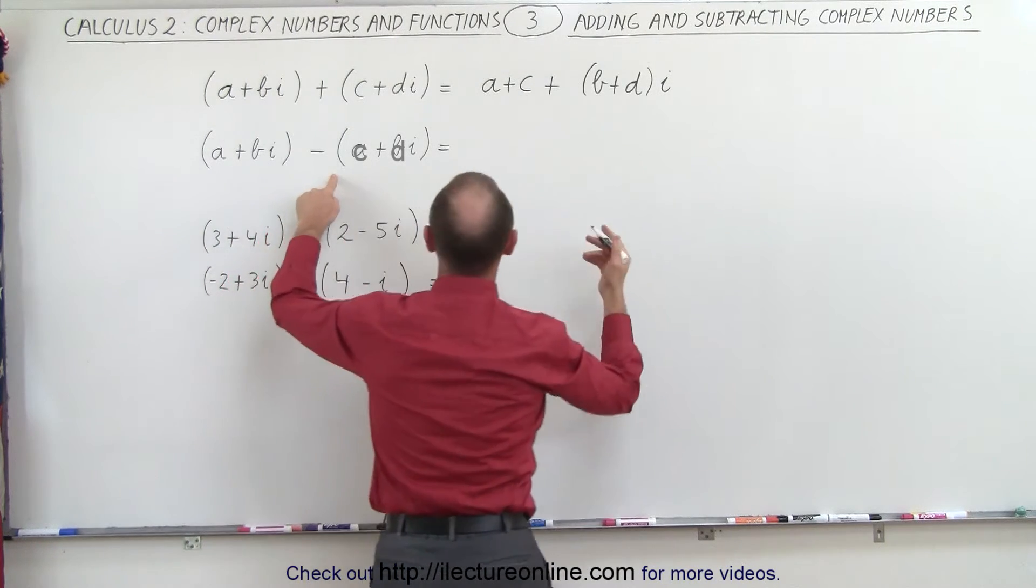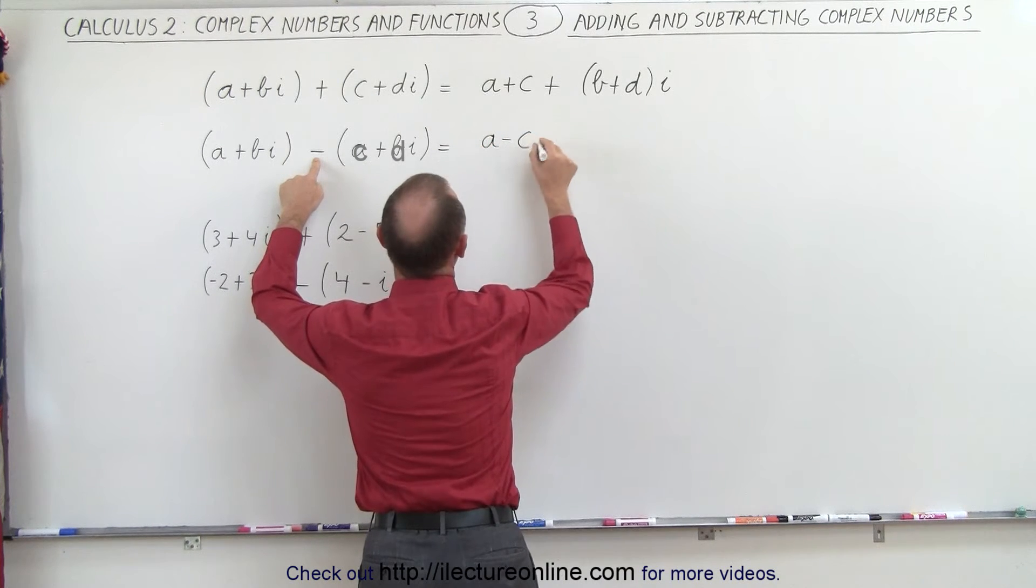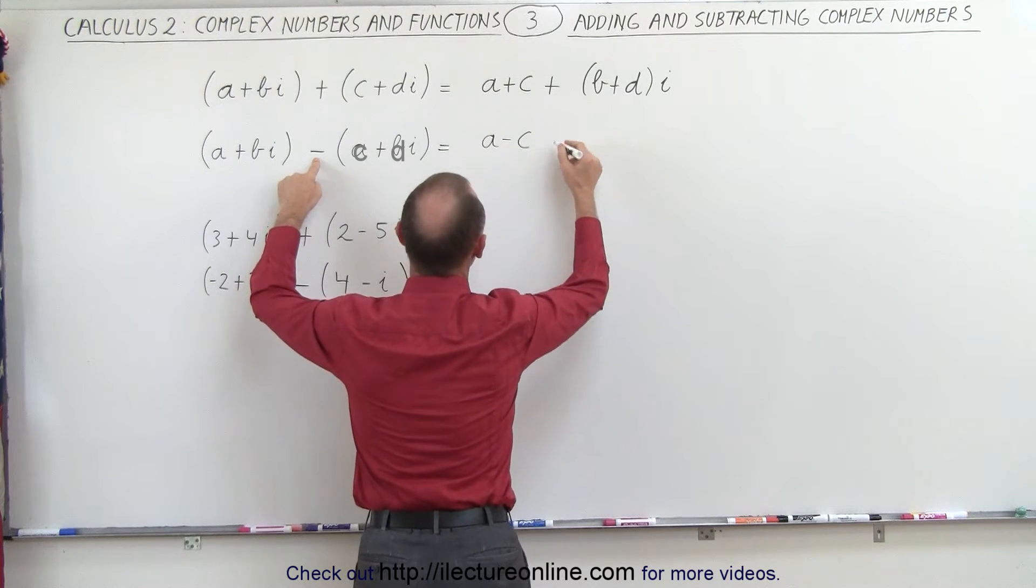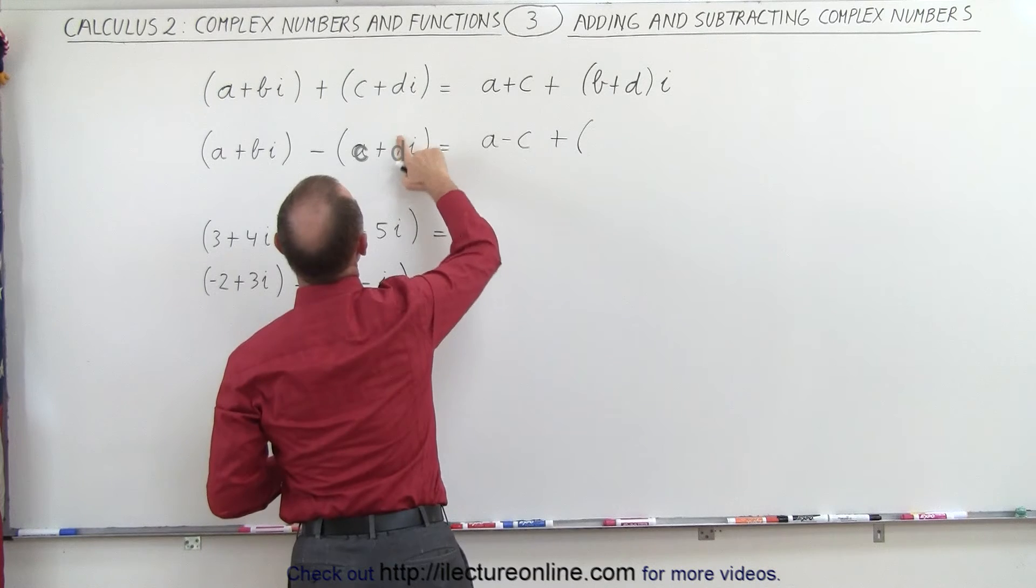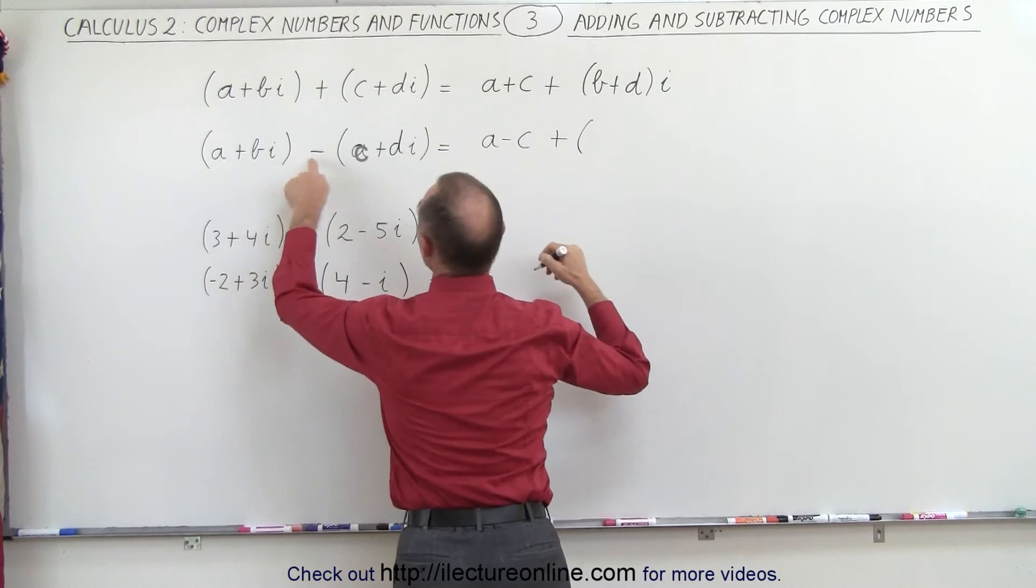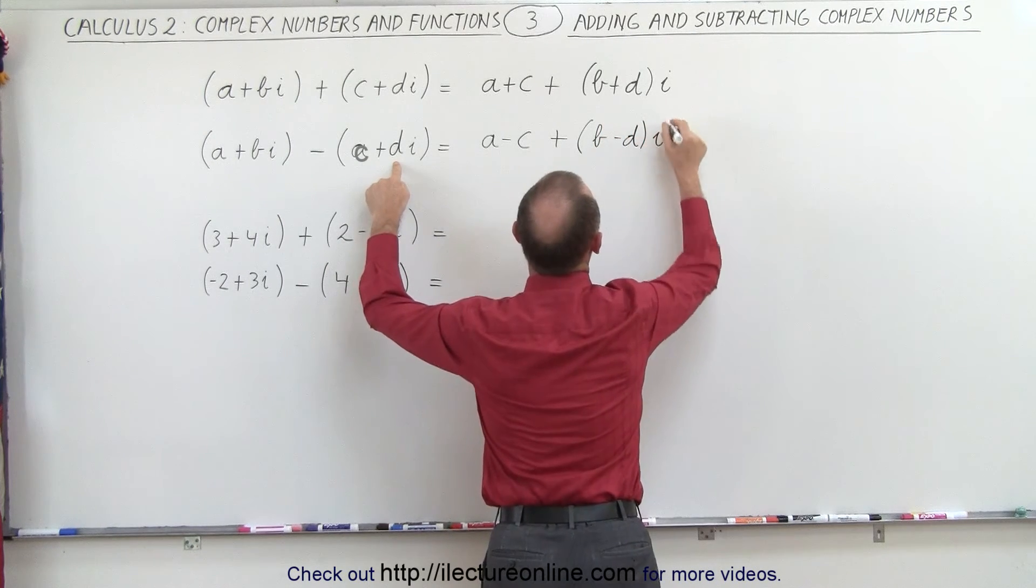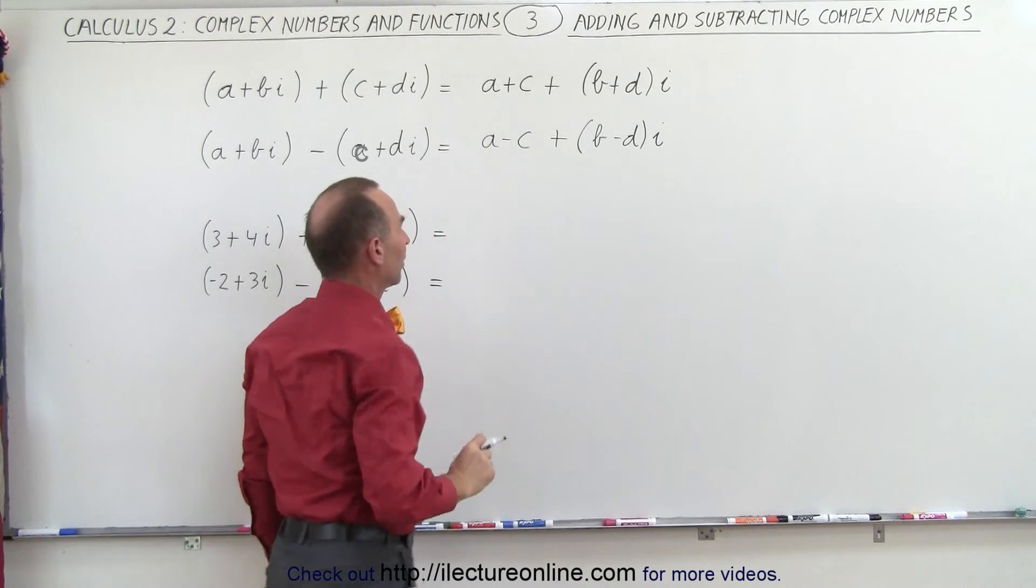When we subtract, we do the same thing, but in this case, since we're subtracting, this becomes a minus c, which is the real part of the sum, or in this case of the difference, plus b, oh, and this should say d. That makes it a little bit better, let's call it a d. So here we have b minus d, times i. This is the imaginary part of the difference, this is the real part of the difference.